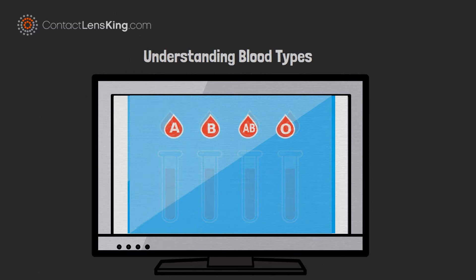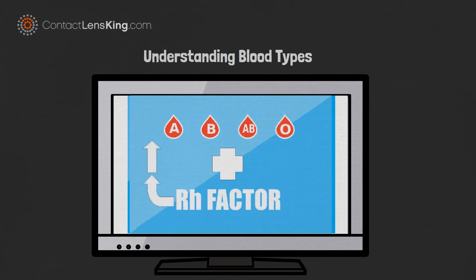In addition to the antigens, there is a protein called the Rh factor, which when present, defines the blood type as positive, and negative if absent.